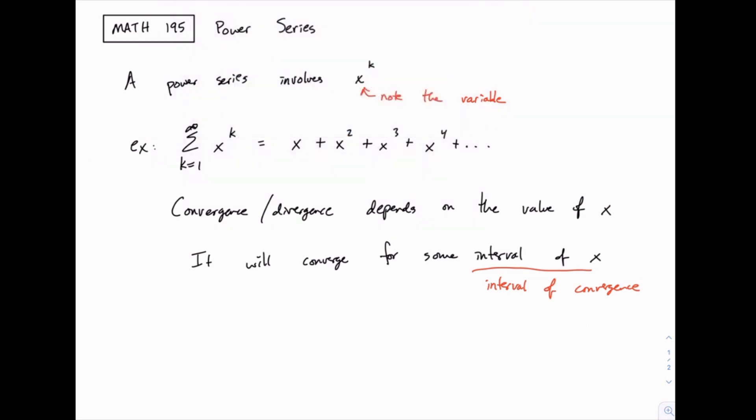So when it comes to finding this interval of convergence, again, that's our main goal. The nice thing is that we only have to worry about one test to make this work. For the interval of convergence, we're always going to use the ratio test. When we talked about the ratio test, we talked about how it was useful for things involving powers of k, so of course when we see a power series, that's why the ratio test comes in handy. Let me show you with this simple example, how we can find the interval of convergence.